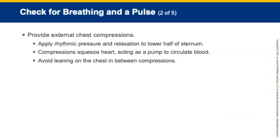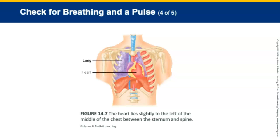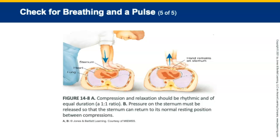Provide external chest compressions by applying rhythmic pressure and relaxation to the lower half of the sternum. The compression squeezes the heart, acting as a pump to circulate blood. Avoid leaning on the chest between compressions because complete recoil is needed. Compression and relaxation should be rhythmic and of equal duration—a one-to-one ratio—and the sternum must be released so it can return to its normal resting position between compressions.